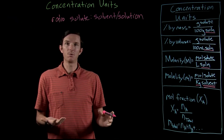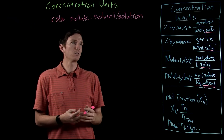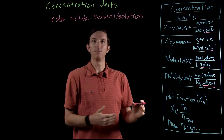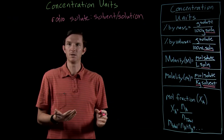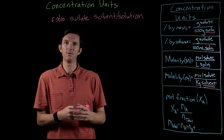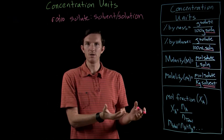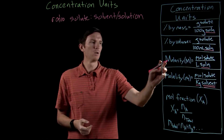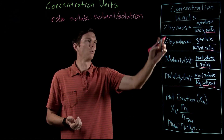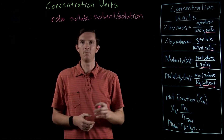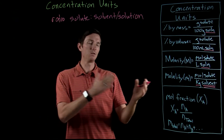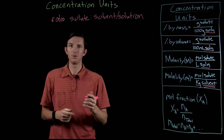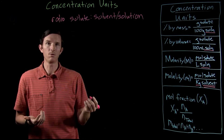Before we get to colligative properties, we want to make sure we can convert between these concentration units. Sometimes you'll be given a solution at a known molarity or percent by mass, and you need to convert between those. Let's look at that with an example using sodium chloride.